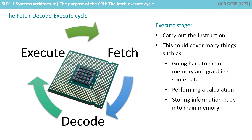Now it knows what it needs to do, the CPU can carry out or execute the instruction. This could actually involve many different actions depending on the nature of the instruction itself. For example, we might have to go back to main memory and get some data, we might be asked to perform a calculation, or we might be told to store information currently in the CPU back into main memory.